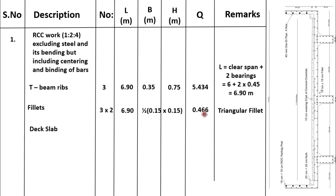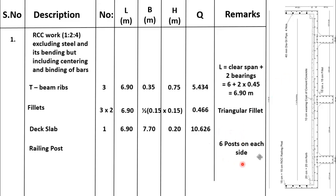Now we will calculate concrete quantity for the deck slab. The number of slabs is 1. The length of the slab is equal to the length of the beam, which is 6.90 metres. The total breadth of the slab is 7.7 metres. The thickness or depth of the slab is 0.20 metres. After multiplication, we get 10.626 cubic metres. We will also calculate concrete quantity for railing posts. As mentioned, 6 posts are provided on each side, so total posts on both sides are 2 × 6 = 12. The dimensions are 15 cm by 15 cm and height is 120 cm. Multiplying these quantities, total concrete for railing posts is 0.324 cubic metres.